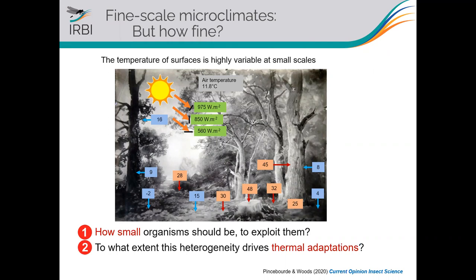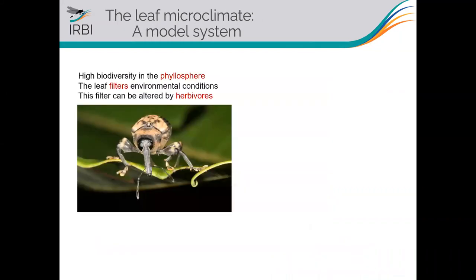Two questions immediately arise: first, how small must organisms and insects be to exploit these temperature patterns? And to what extent can this heterogeneity drive further adaptations for insects living in this thermal landscape? To tackle these questions, we have a favorite model: the leaf macroclimate.